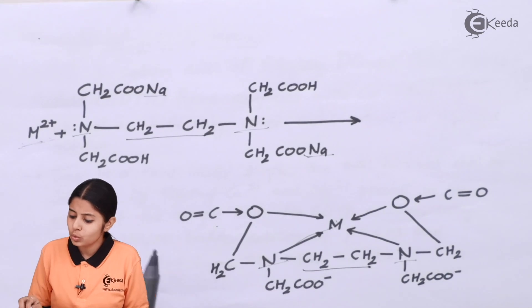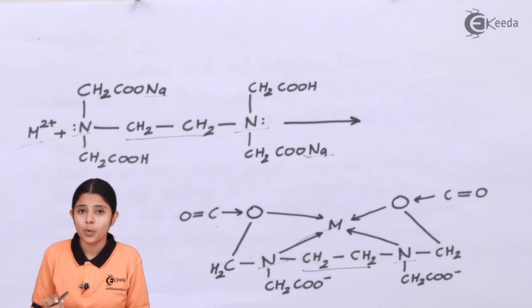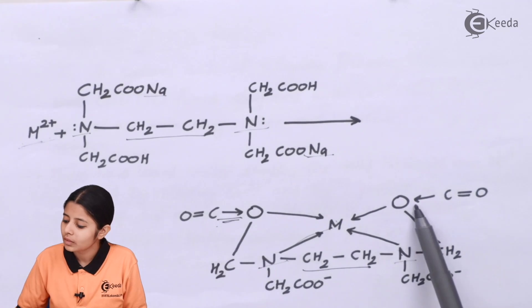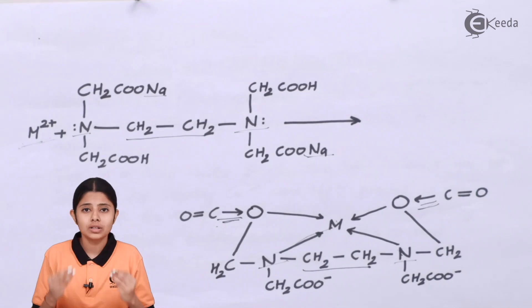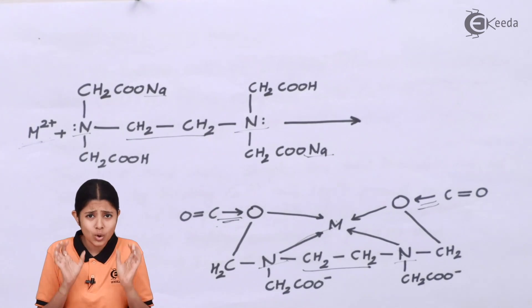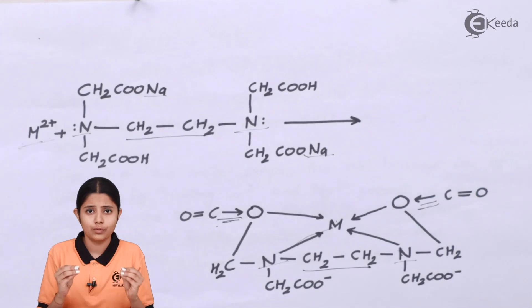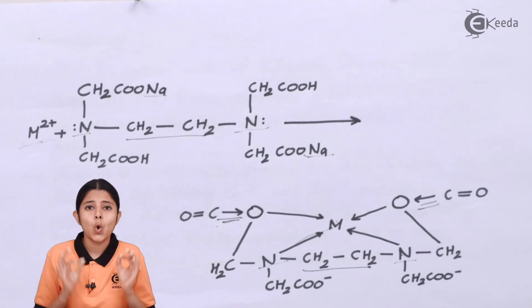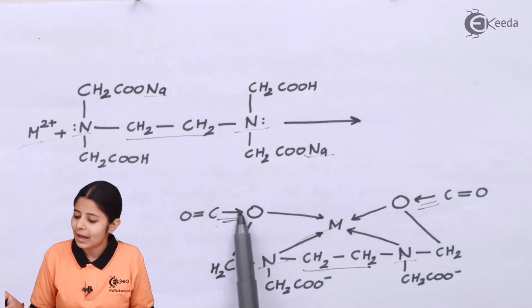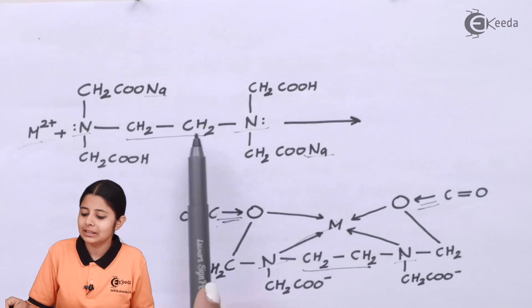We have three kinds of bonds: ionic bonds, made up of positive and negative ions; covalent bonds, made by two atoms of similar electronegativity sharing electrons; and coordinate bonds, which happen between metal atoms and ligands and are shown by an arrow. All these arrows in the complex structure show coordinate bonds. This is the complex which forms when EDTA reacts with the metal.